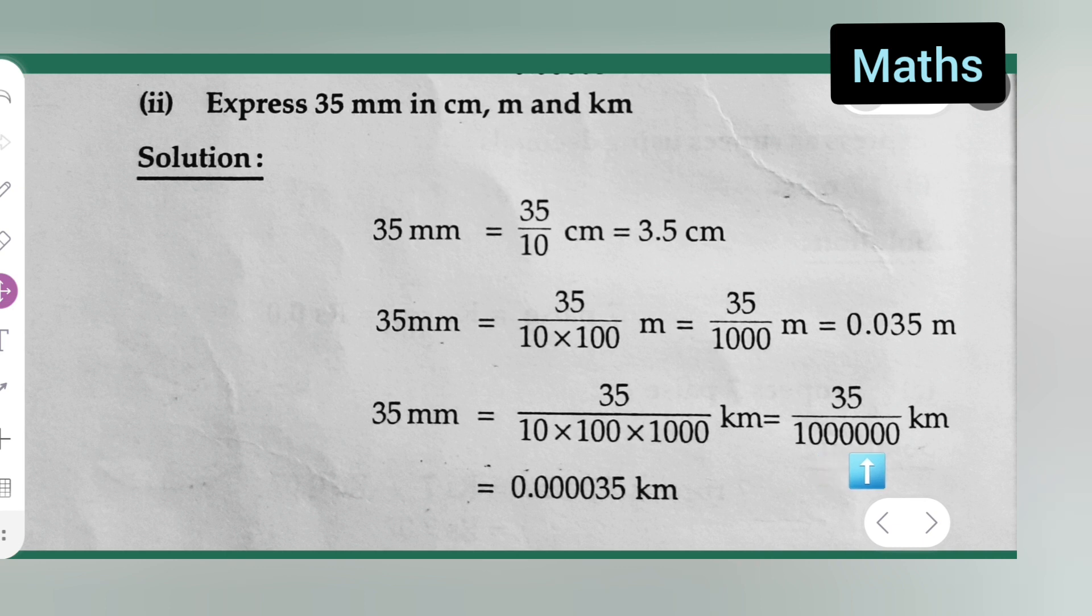So basically, the decimal point will come in the sixth place: 1, 2, 3, 4, 5, 6, which gives us 0.000035 kilometers.